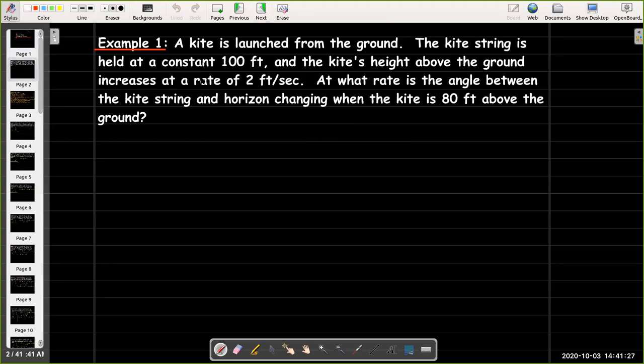So, our first example. We have a kite. It's launched from the ground. The kite string is constant, 100 feet, and the kite's height above the ground increases at a rate of 2 feet per second.